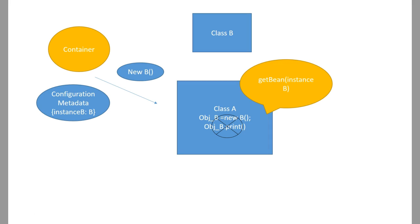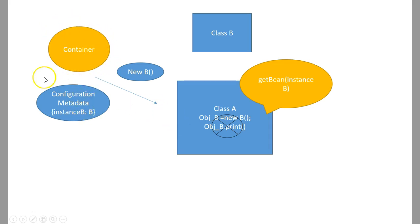Later, if we need to change class B to class C, that is also not possible without changing class A. So to enable this, we use dependency injection. In dependency injection, the dependency is provided by some outer entity — in this case, a container. The container provides the dependency based on the mapping provided in the configuration metadata.